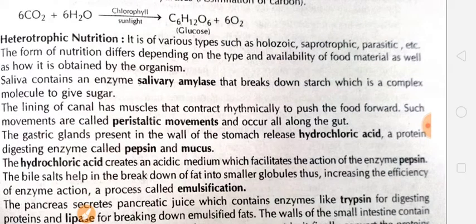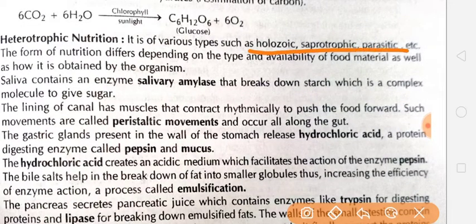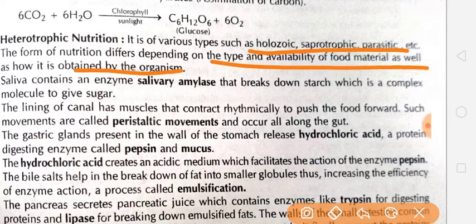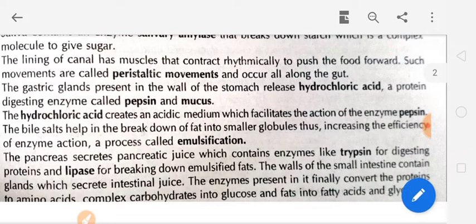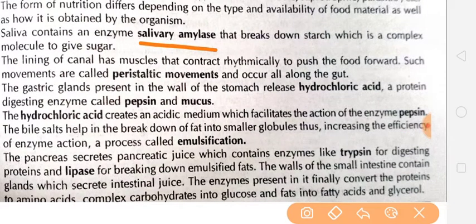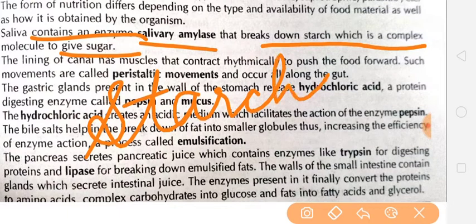Heterotrophic nutrition is a form of nutrition that includes types such as holozoic, saphotrophic, and parasitic. Animals depend on other animals or plants for their food — this is heterotrophic nutrition, showing that organisms obtain their food in different ways. Now, salivary amylase: saliva contains the enzyme salivary amylase that breaks down starch, which is a complex molecule, to give sugar. The starch is broken down in the mouth by salivary amylase.